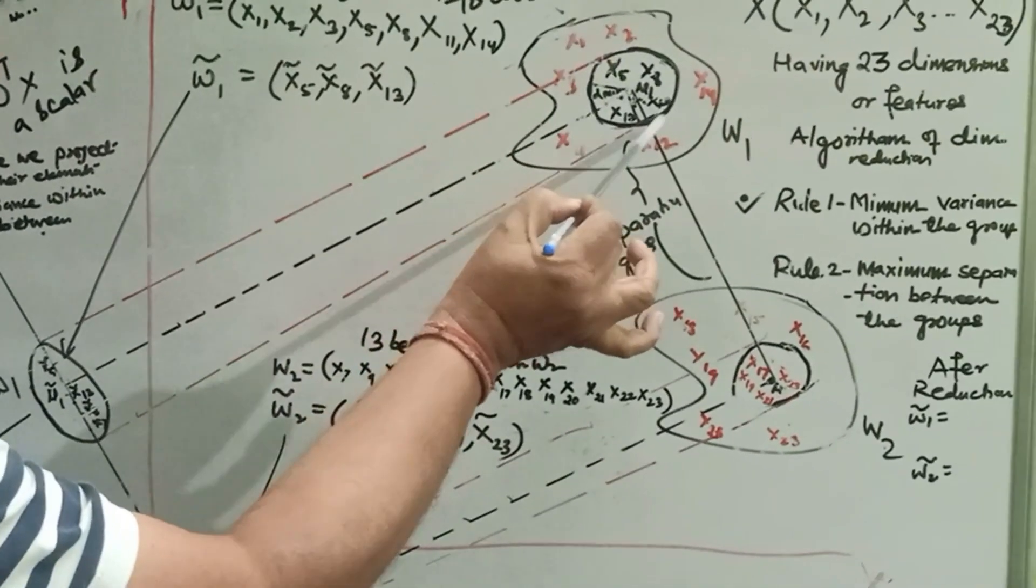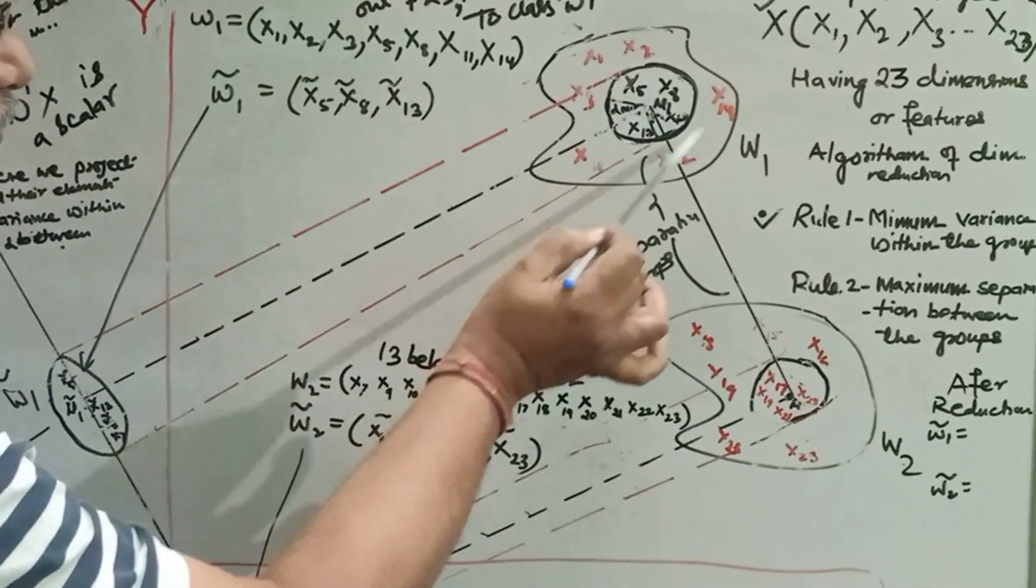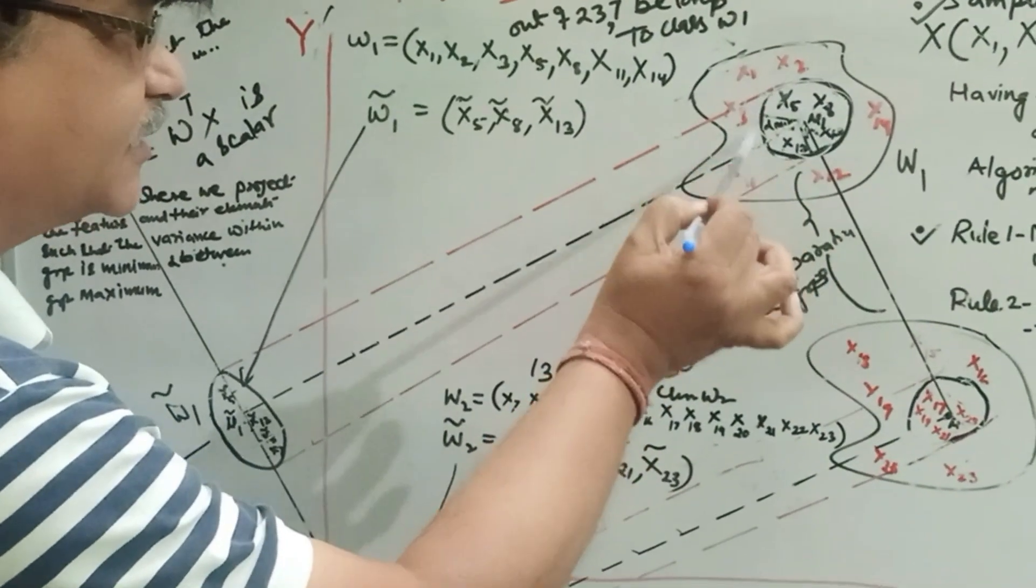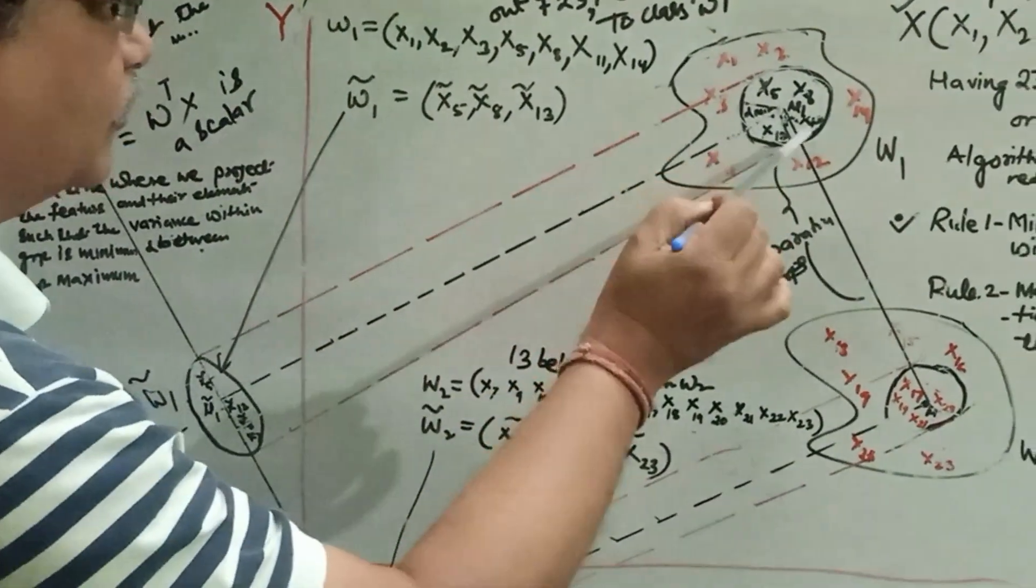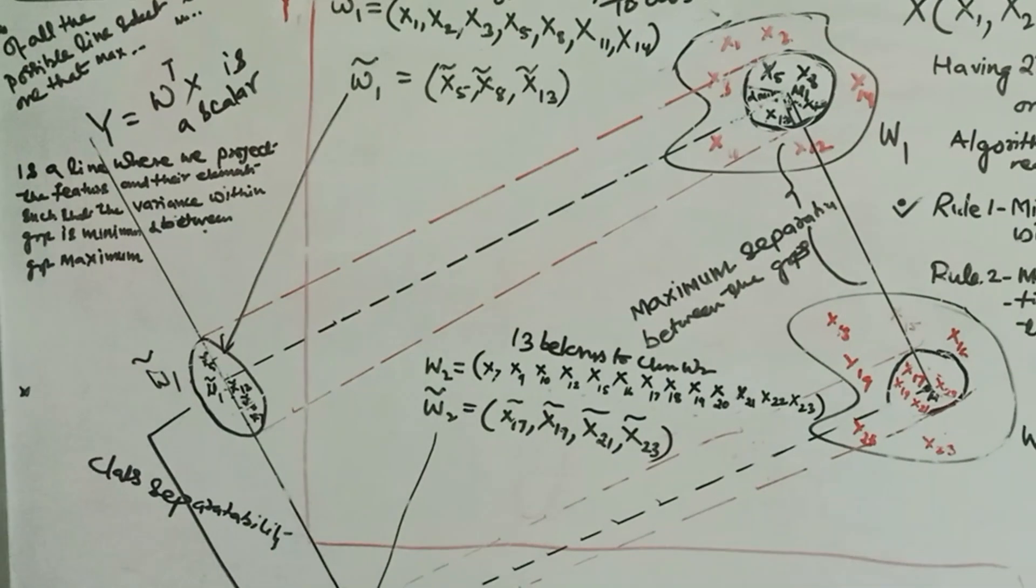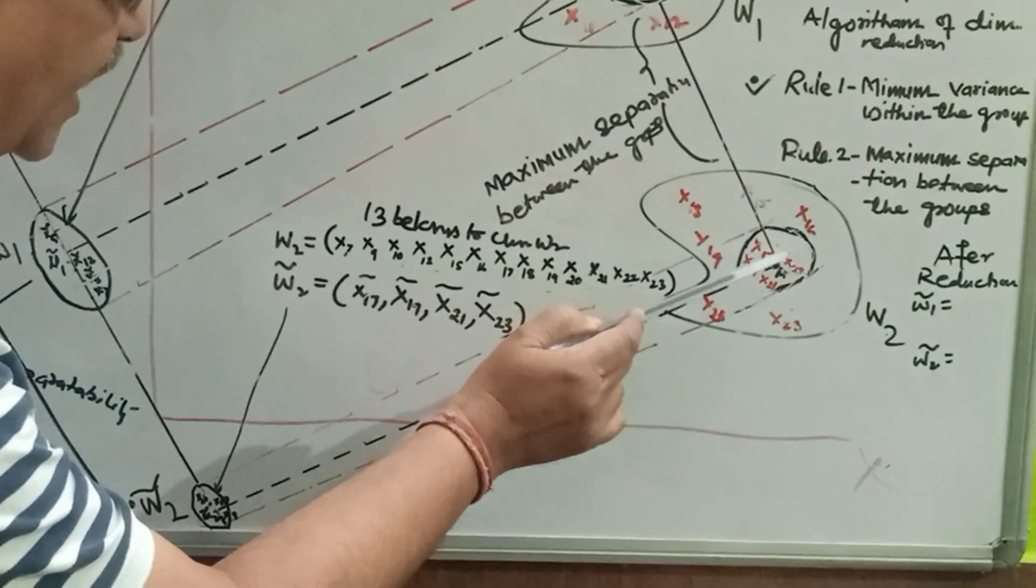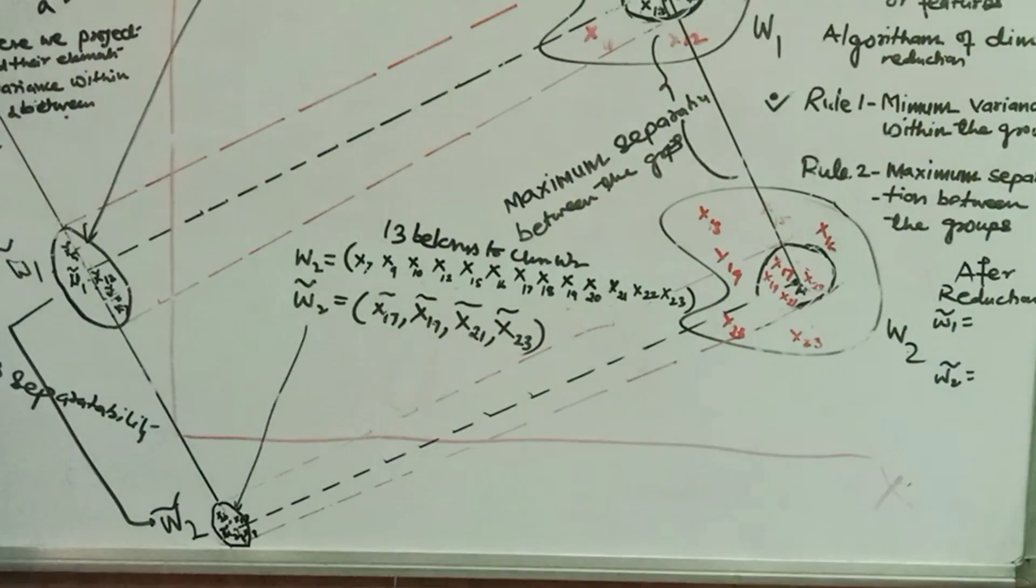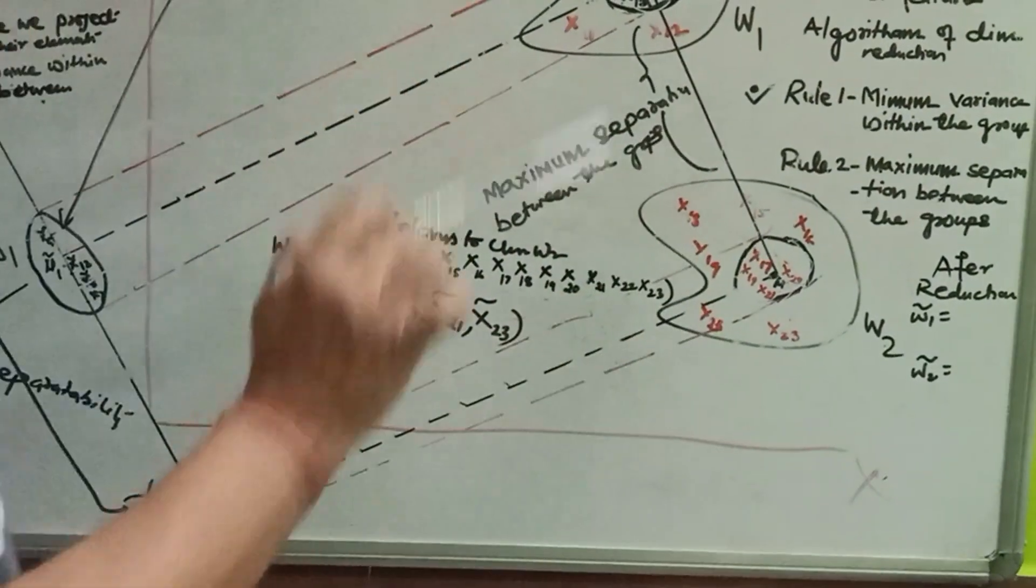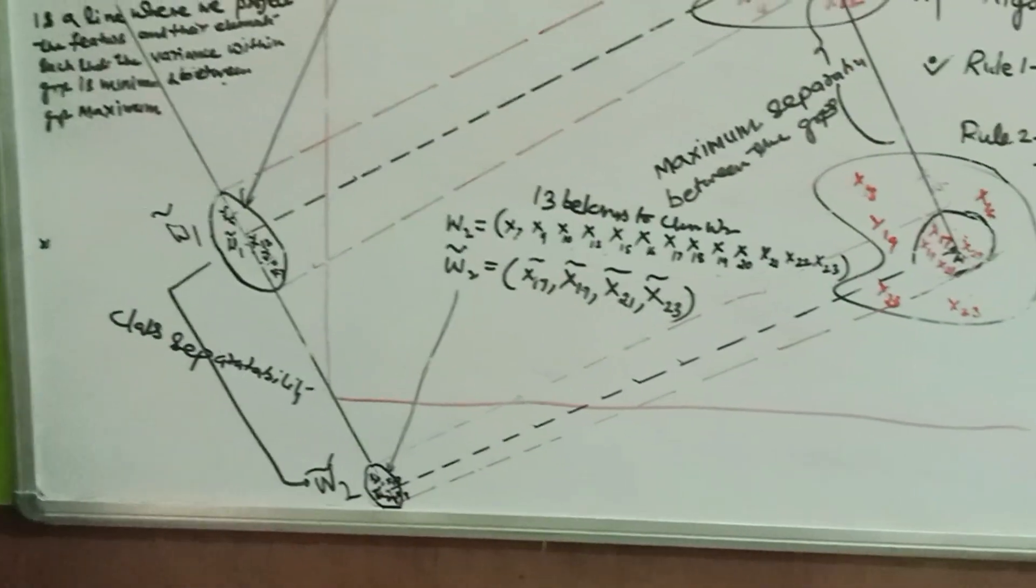Right. So, what happened? This is the periphery of this curve. W1 taking mu1. And this curve is telling that the minimum variance within the group circle is this. This circle is telling to you that minimum variance within the group. And under this group, there are only X5, X8, and X13 samples are coming in it. Like this. In this circle, or say, in this group, only X17, X19, X21, and X23.